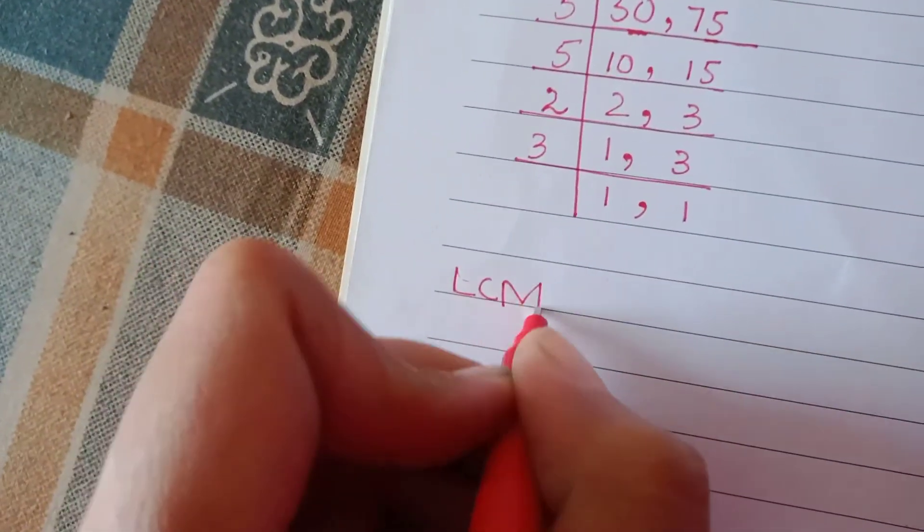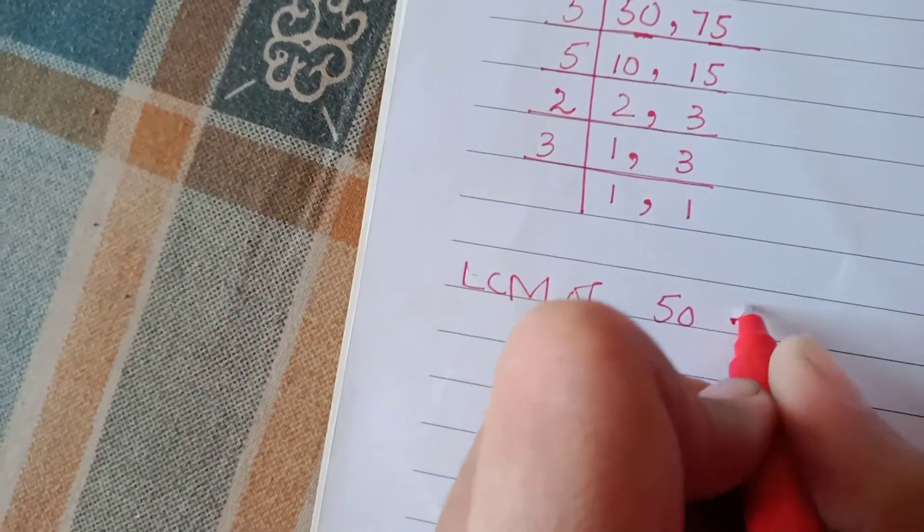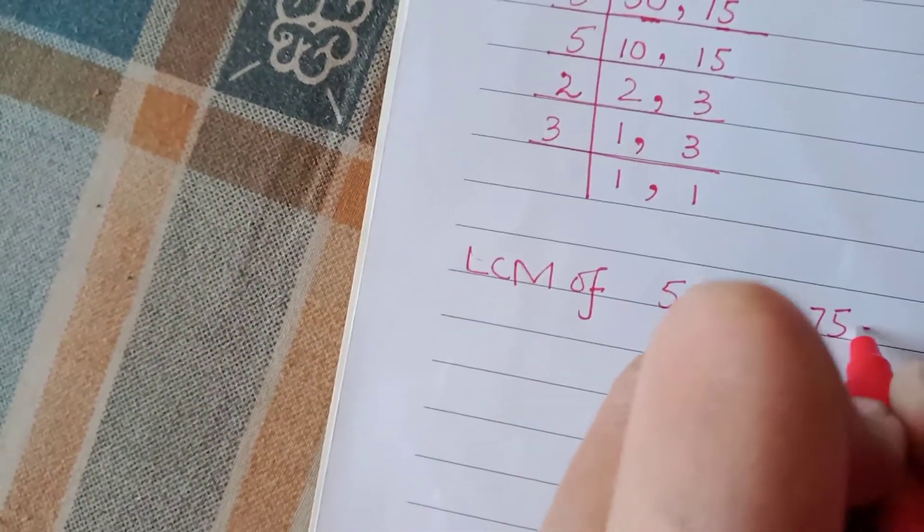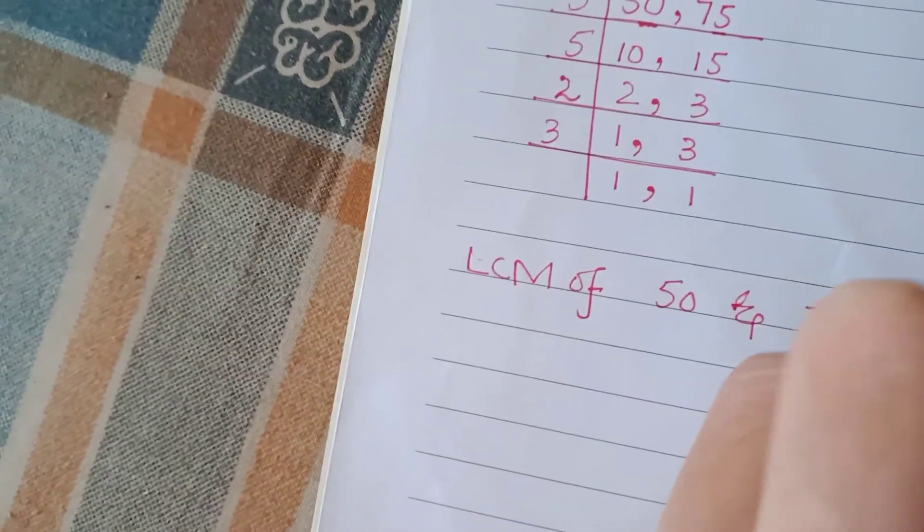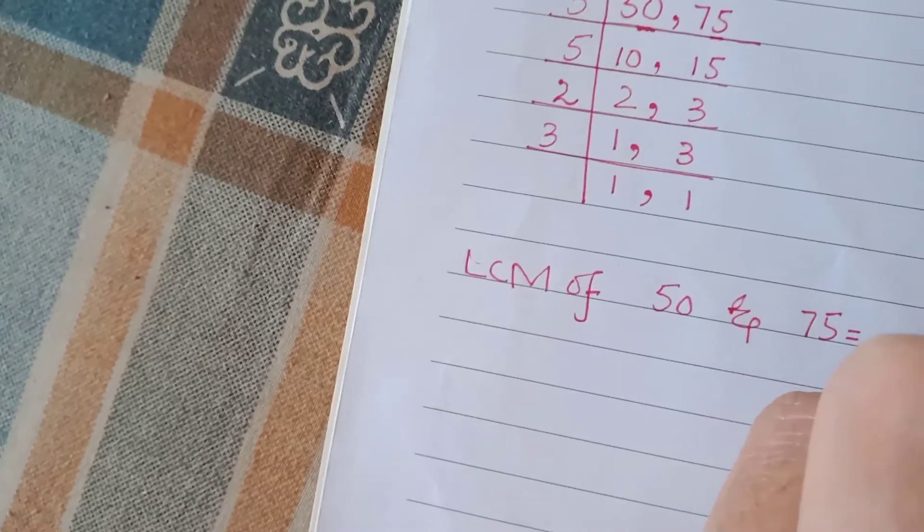Now, the LCM of 50 and 75 will be equal to 5 multiply by 5, multiply by 2, multiply by 3. 5 times 5 is 25.